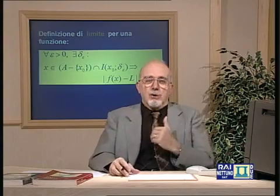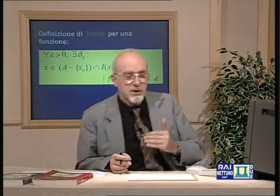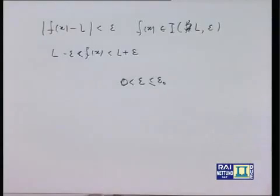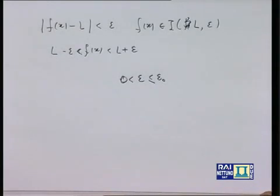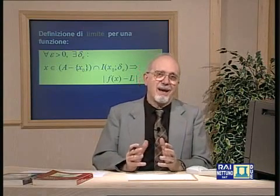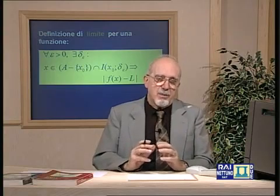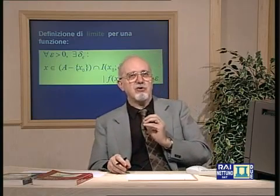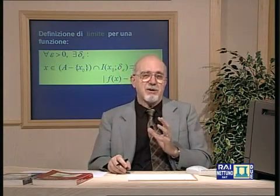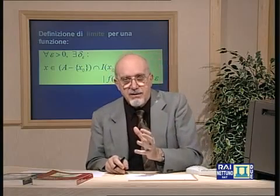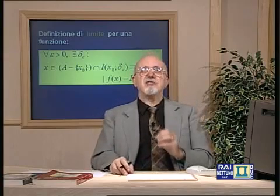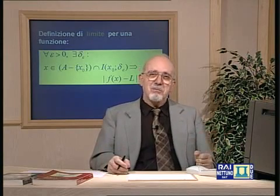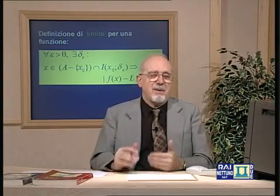Nella definizione non è necessario sperimentare tutti i valori di ε: basta considerare i valori positivi fino a un certo ε₀, perché se la strategia vincente funziona per gli ε piccoli — da 0 escluso fino a ε₀ incluso — certamente funziona anche per gli ε più grandi. Questo spiega perché su certi libri si dice 'preso un numero ε piccolo ad arbitrio'.